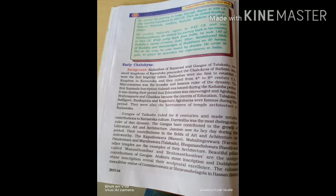They laid the foundation of temple architecture of Karnataka. The Gangas of Talakadu in the 6th century made a noticeable contribution to Karnataka culture. Durvinita is the most distinguished ruler of the dynasty. The Gangas contributed to the growth of literature, art and architecture, and Jainism during this period.